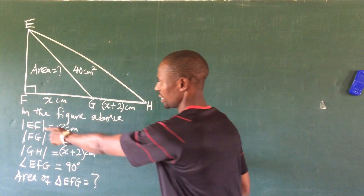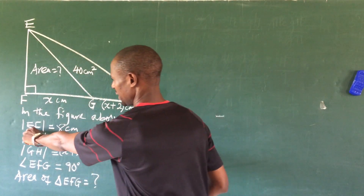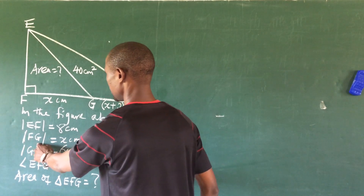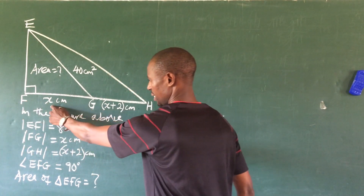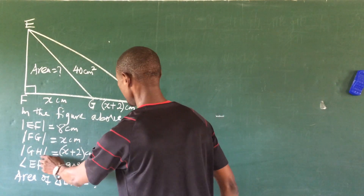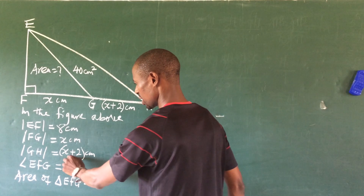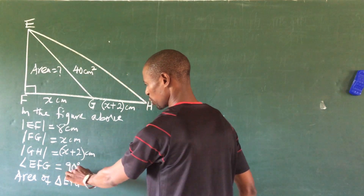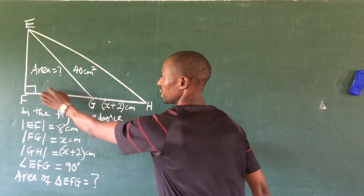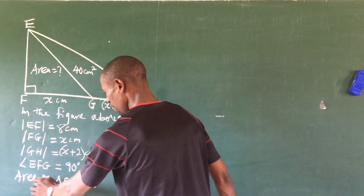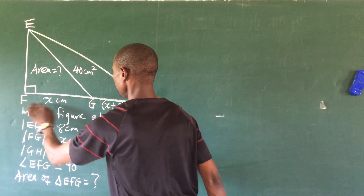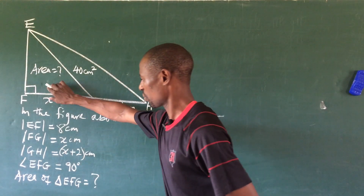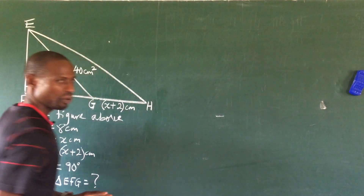From the figure, line EF equals 8 cm, line FG equals x cm, and line GH equals x plus 2. Angle EFG equals 90 degrees. We are asked to find the area of triangle EFG — that is, the area of the blue region.